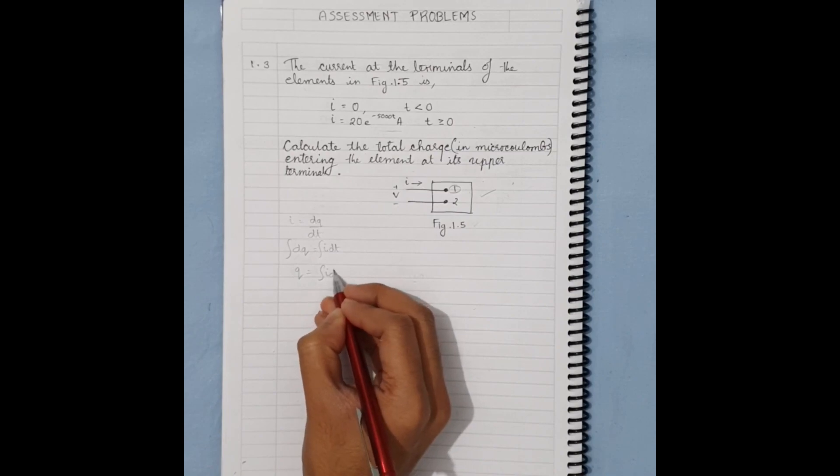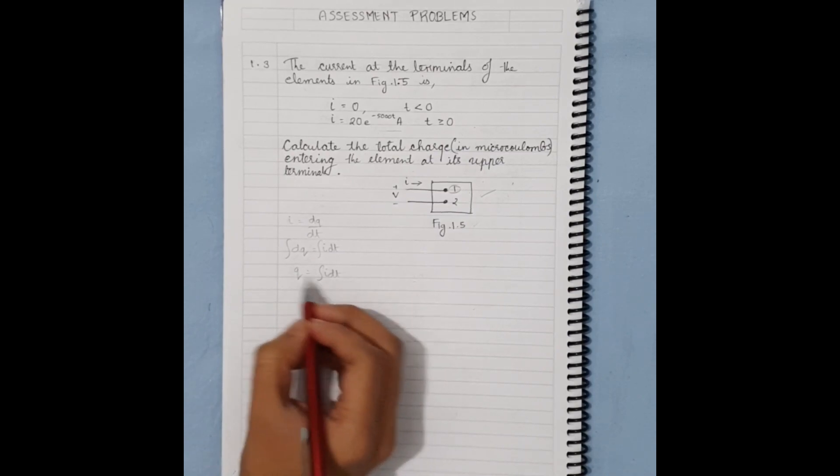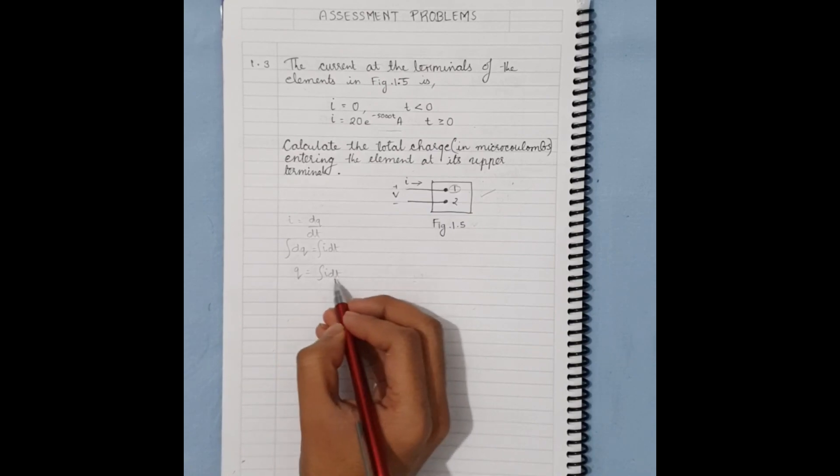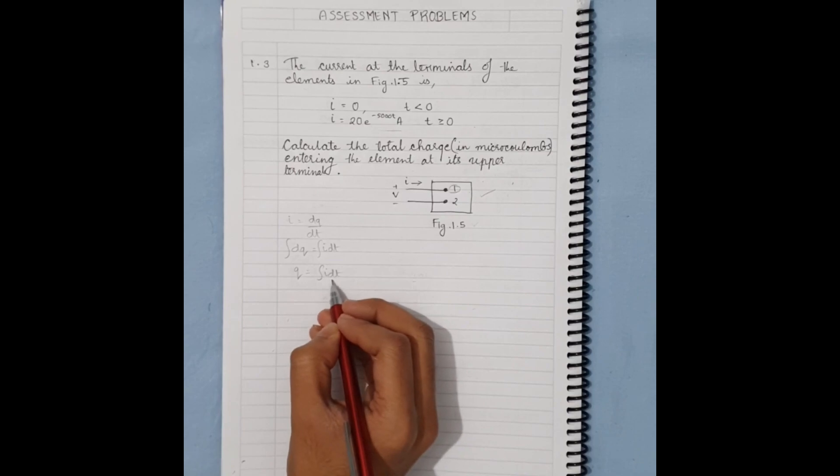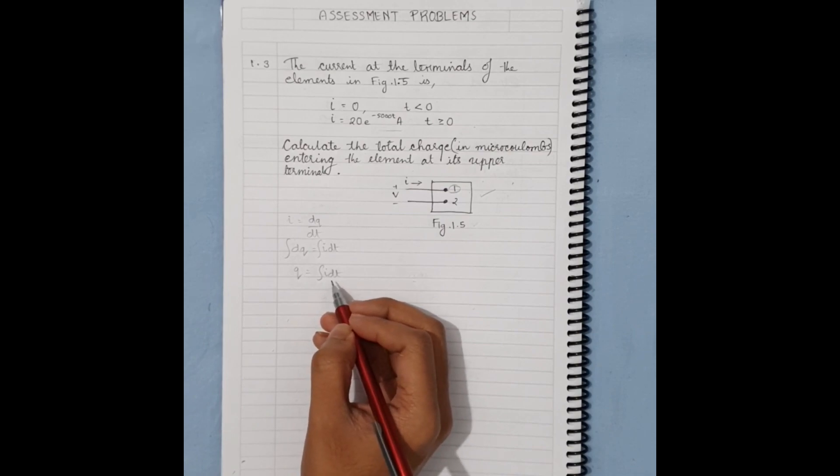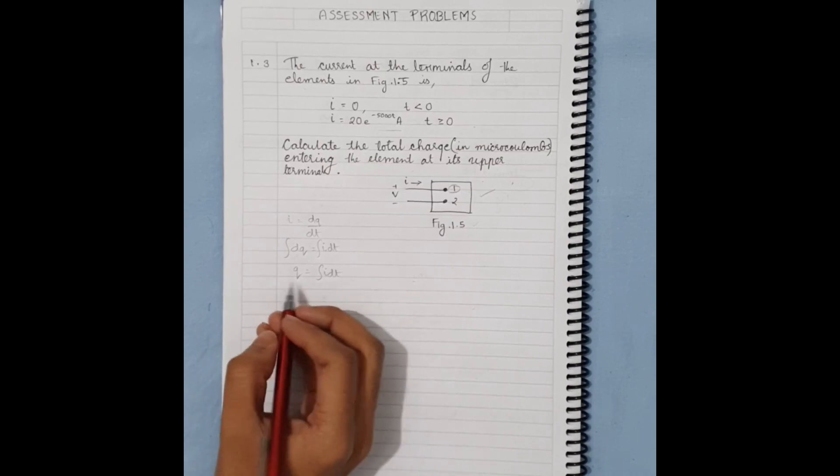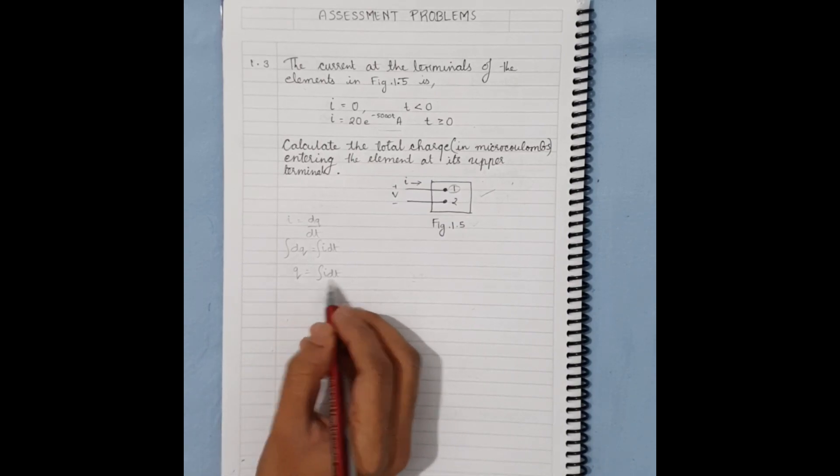So we found the expression for charge with respect to current when time is changing. Now, in order to find the total charge, we need to integrate from zero to infinity.